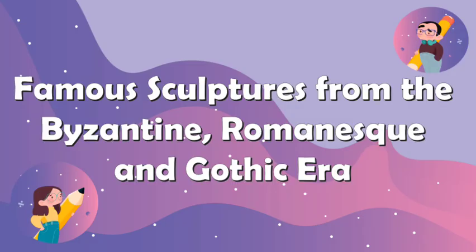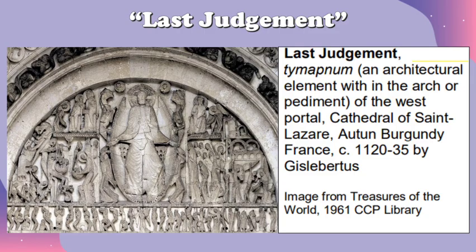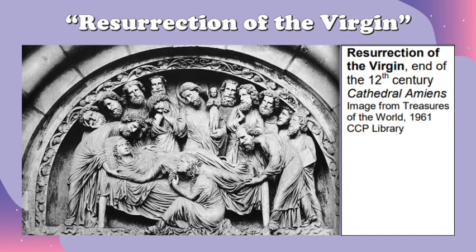Here are some of the sculptures from the Byzantine, Romanesque, and Gothic era. The first one is called the Barberini Diptych, an early example of Byzantine work from ivory. The second one is called the Last Judgment, an architectural element with an arch or pediment — the west portal of the Cathedral of Saint Lazare in Autun, Burgundy, France. Next is called the Resurrection of the Virgin, made at the end of the 12th century in the Cathedral of Amiens.